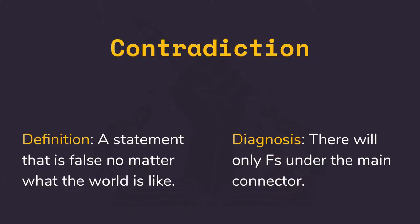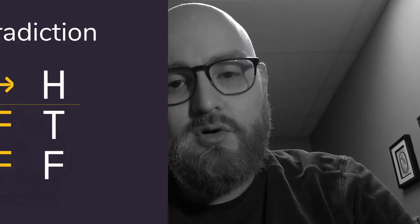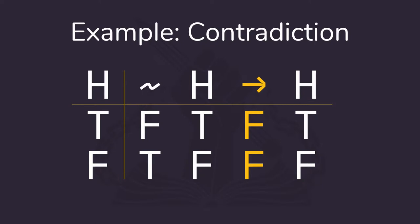A contradiction is a statement that can never be true — no matter what the condition of the world is, it is never true. We can see a contradiction in our truth table whenever there are zero lines in which the main connector is true.